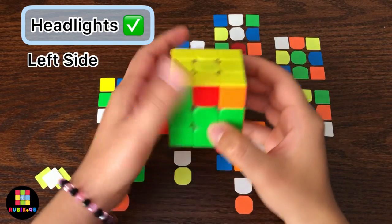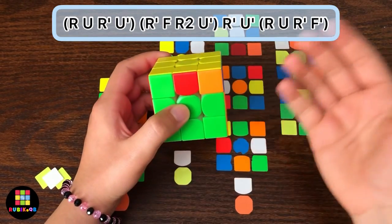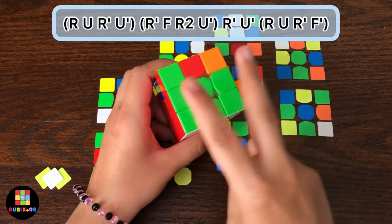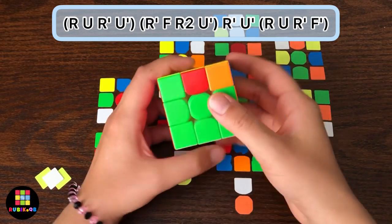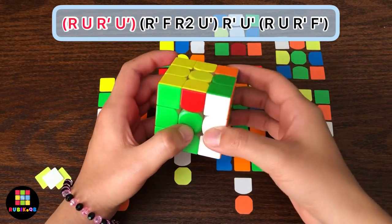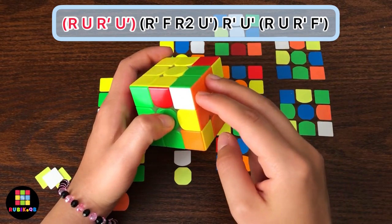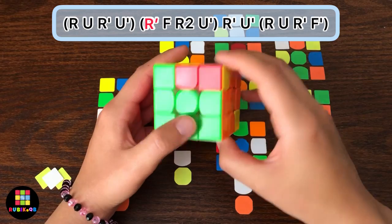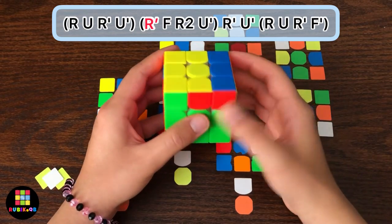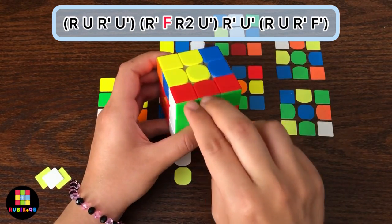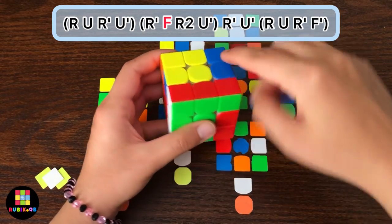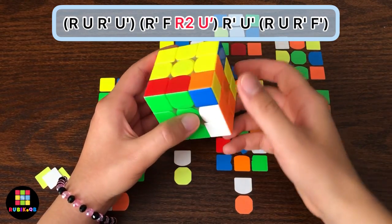For the first one, hold the headlights on the left side and then do this algorithm. But if it's hard for you to memorize it, just keep tracking these two F2Ls. Look at here, do R U R' and U', and take out this F2L and then do R', and put it right here. Then do F and bring this F2L into the top layer and do R2 and U'.